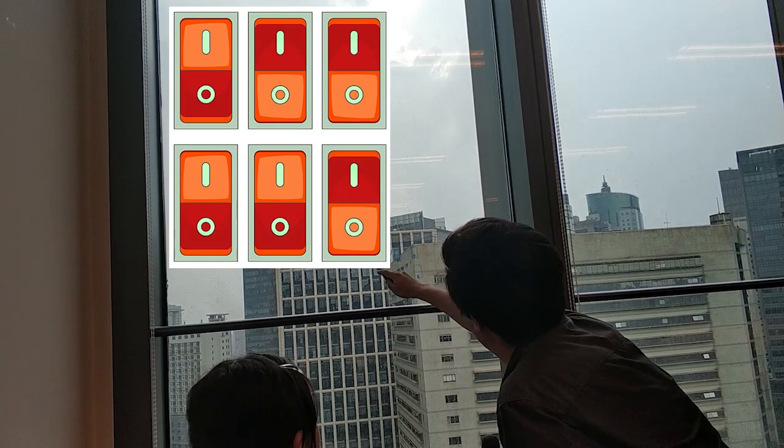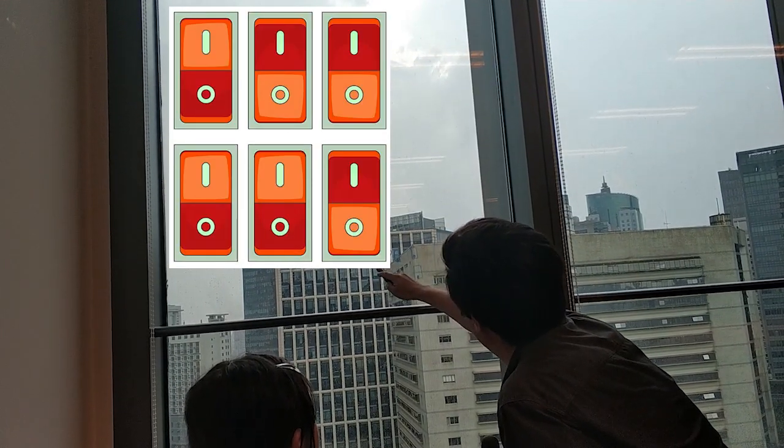In a computer, everything is stored as zeros and ones. You can imagine it like lots of different switches — a switch can be either on or off. In a computer, if you look at what it's storing, some switches will be on and some will be off. When it's on we call it one, and when it's off we call it zero. So this one would be called one, zero, zero, one, one, zero. That's in a regular computer.